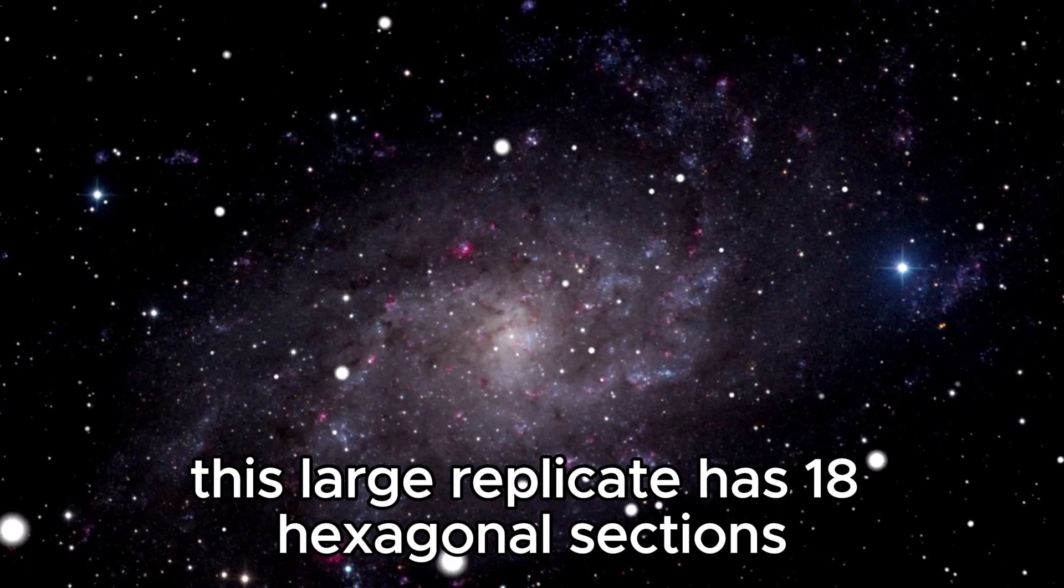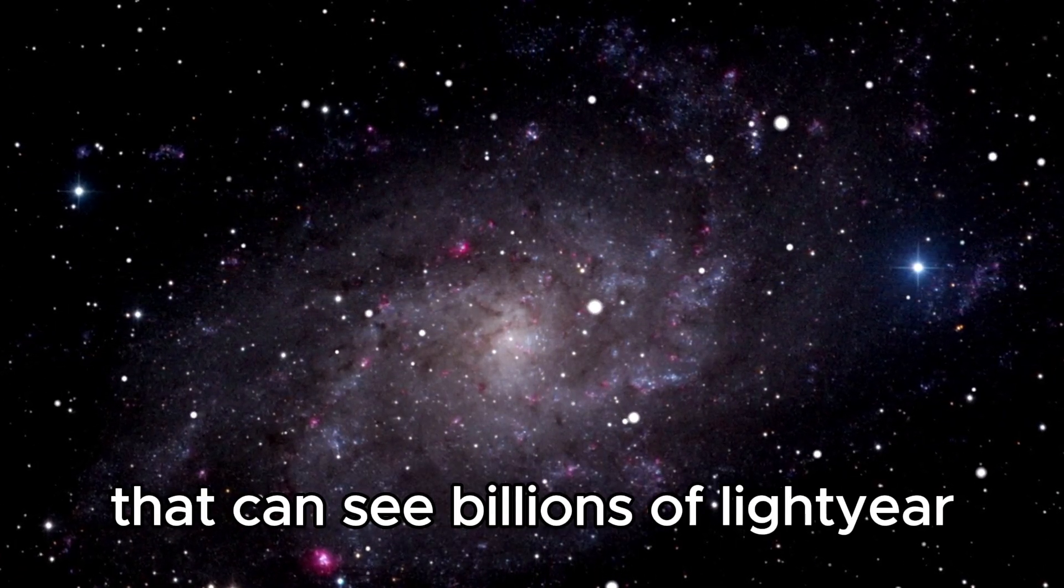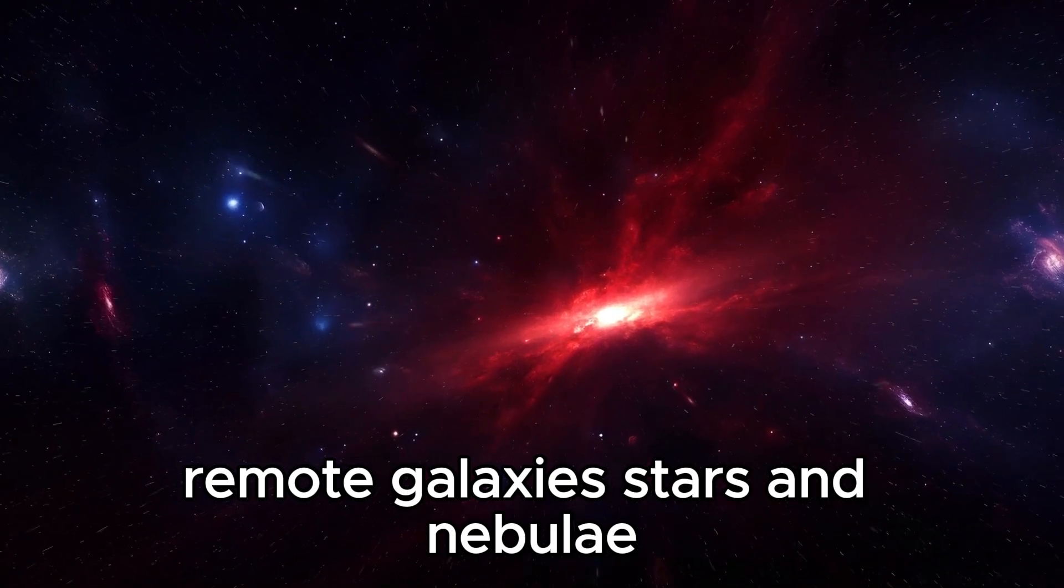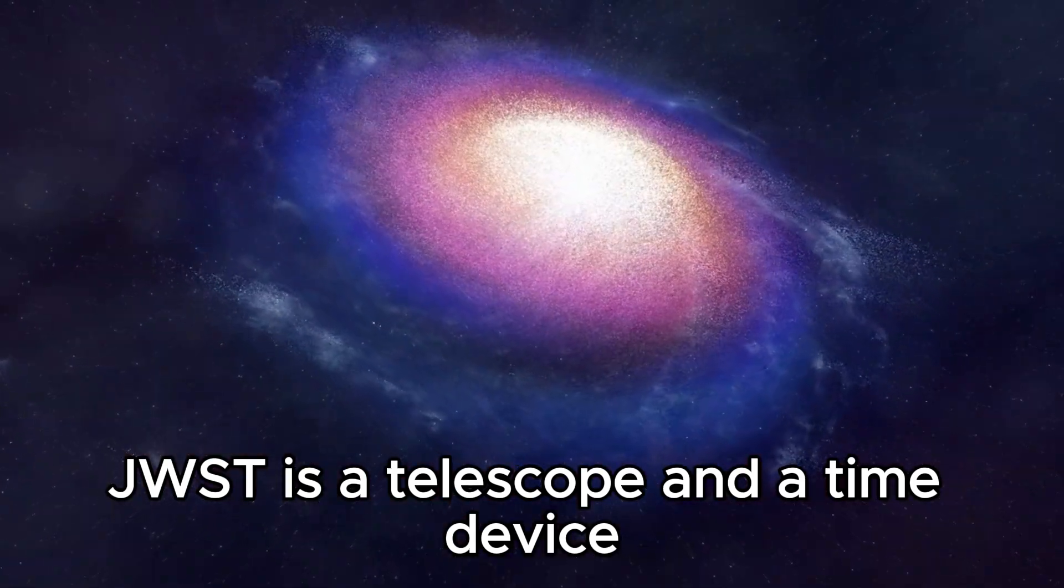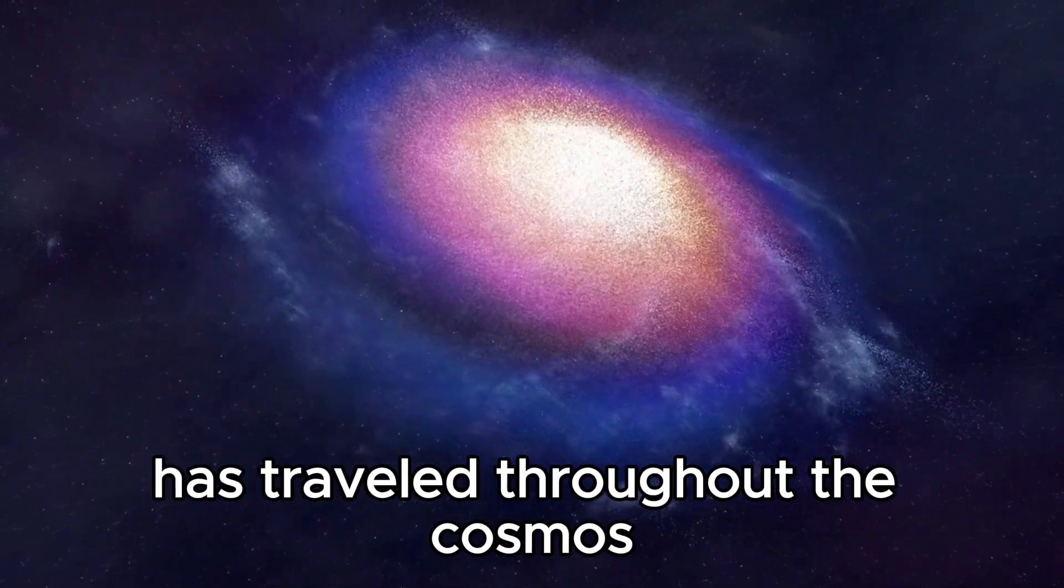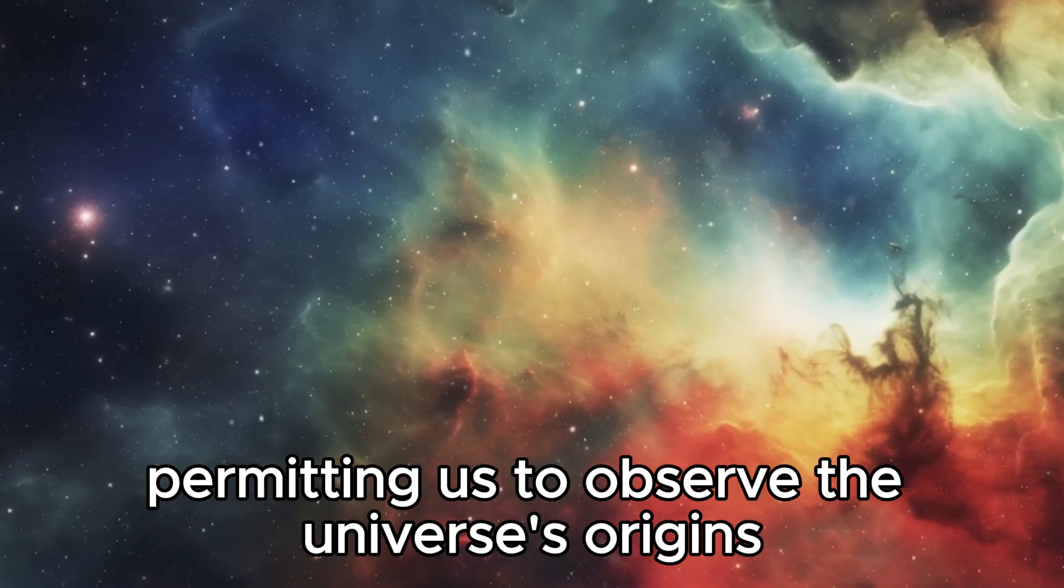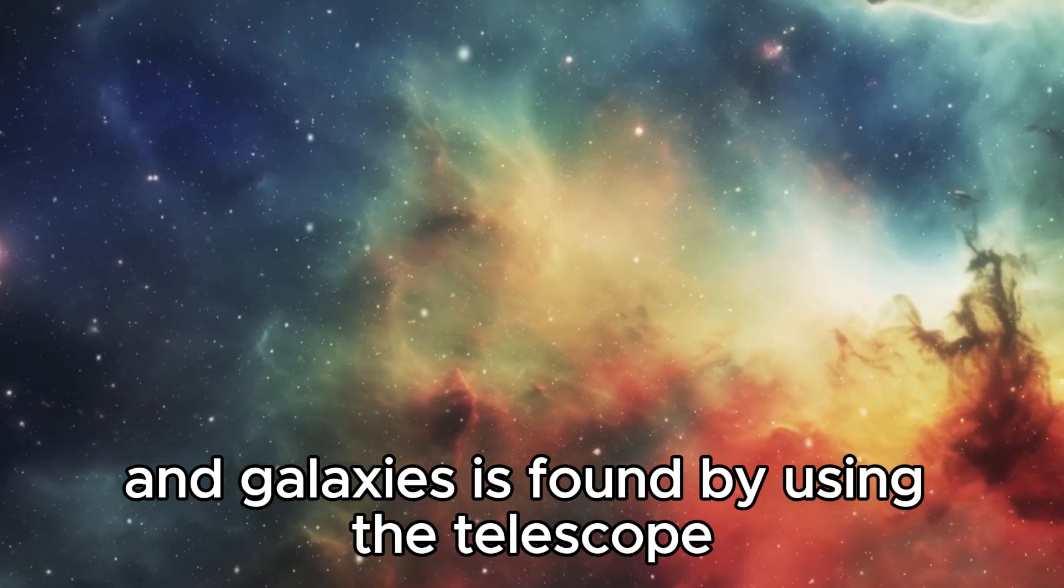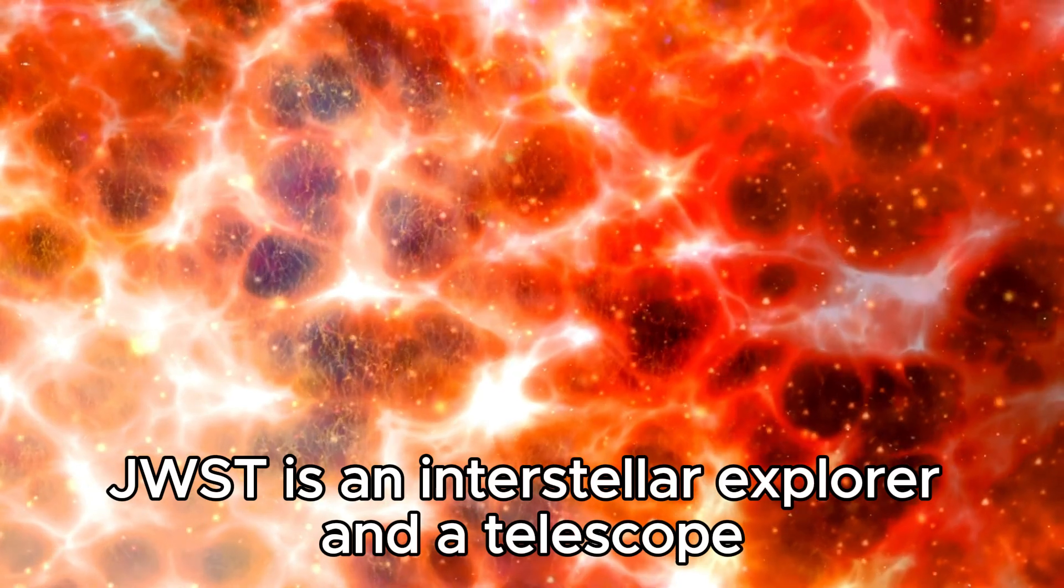This large mirror has 18 hexagonal sections. These mirror parts create a huge view that can see billions of light-years to remote galaxies, stars, and nebulae. JWST is a telescope and a time device. It can discover light that the James Webb Space Telescope has traveled across the cosmos for billions of years, allowing us to observe the universe's origins. Light from old celestial bodies and galaxies is found by the telescope.